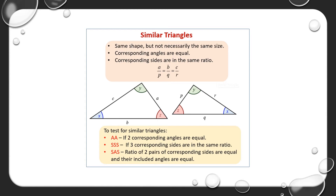So what are the conditions for two triangles to be similar? It should have the same shape but not necessarily the same size — the size can differ but the shape should be the same. The corresponding angles must be equal, and the corresponding sides are in the same ratios — that is, the sides are proportional.